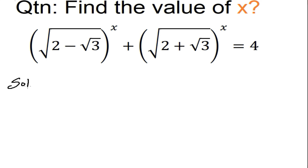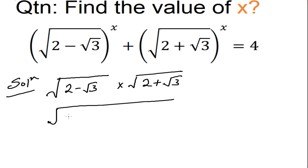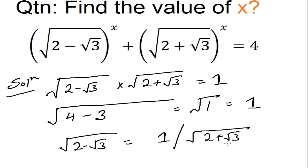We will utilize the substitution method. If you look at these two parts, they are of the form (a − b) and (a + b), so why not utilize that? We let (2 − √3)(2 + √3), and applying the formula (a + b)(a − b) we get 4 − 3 = √1 = 1. So if the product equals 1, then √(2 − √3) = 1 / √(2 + √3).